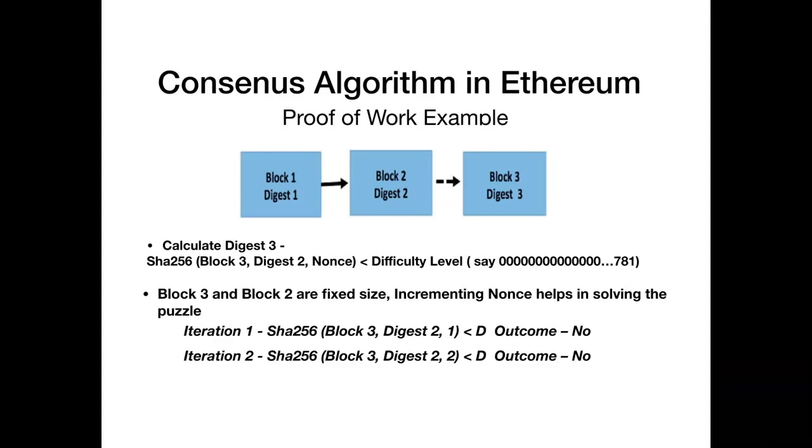So in this scenario at 2 million and 8 the outcome is yes. So as you can see from the above iterations at nonce value 2 million and 8 the equation is solved, where the digest 3 value is less than the difficulty level.